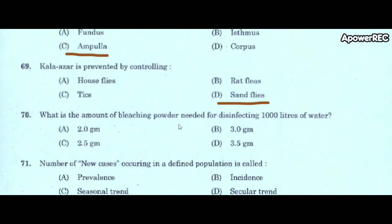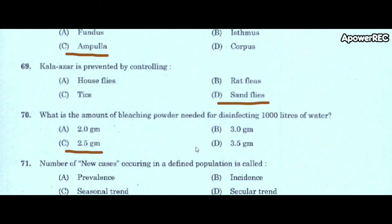Next question: what is the amount of bleaching powder needed for disinfecting 1000 liters of water? A) 2 gram, B) 3 gram, C) 2.5 gram, D) 3.5 gram. Correct answer is 2.5 gram.